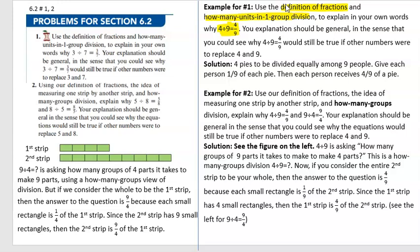We did a similar example in class. If we have 4 pies to be divided equally among 9 people, we take the first pie, cut it into 9 equal parts, and give everybody 1/9. Then we take the second pie and do the same thing: cut it into 9 equal parts, give each person 1/9. We repeat this for the third and fourth pies.